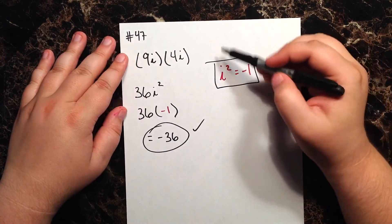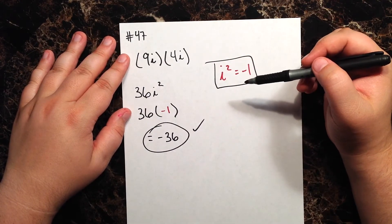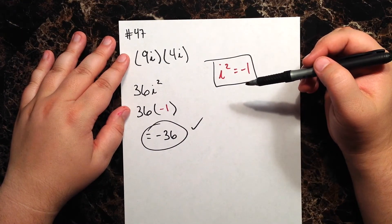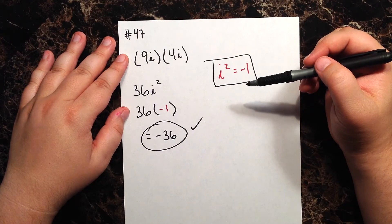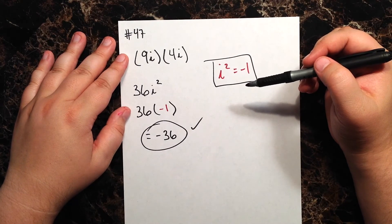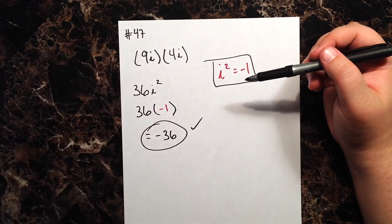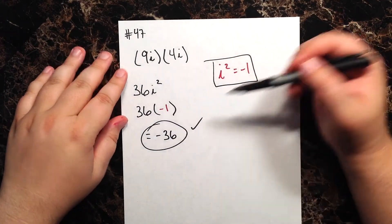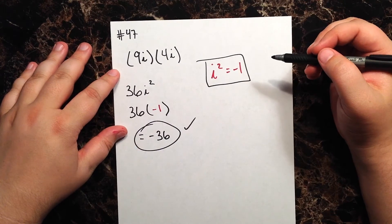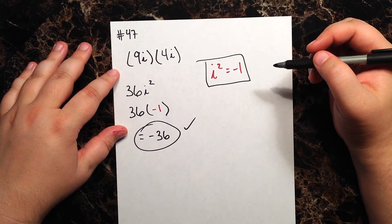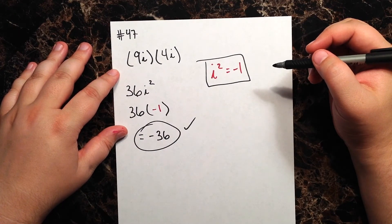So when we substitute the i squared for negative 1, we have to multiply whatever our coefficient is by the negative 1 to get the negative of that particular coefficient. So in this case, negative 36. All right, so let's go ahead and move on to 48, and we'll start to wrap up this review series.